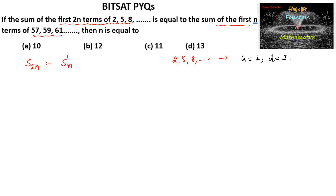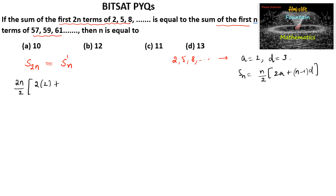The sum of the first 2n terms formula is n/2 times (2a + (n−1)d). So we write 2n/2 times (2×2 + (2n−1)×3).